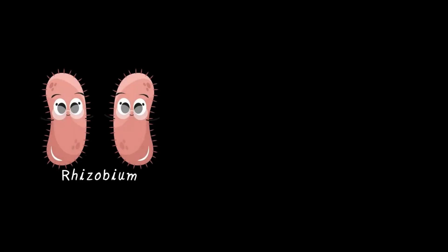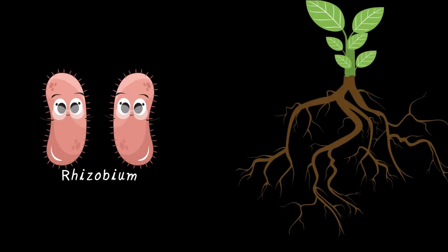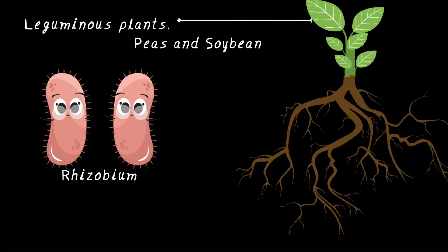The secret lies in this tiny but mighty bacteria called rhizobium. Think of rhizobium as a chef for certain plants. But wait, not all plants get a chef. Only special plants called leguminous plants like peas and soybeans have this privilege. You'll study in higher classes why only certain plants have this privilege of having rhizobium with them.